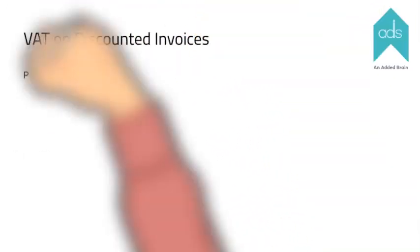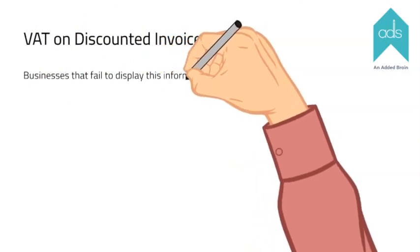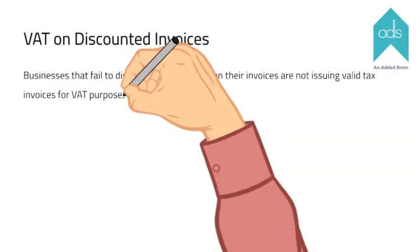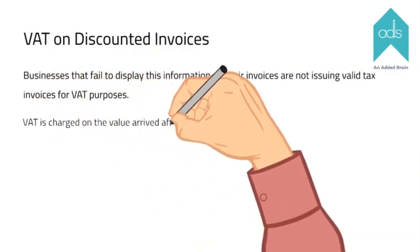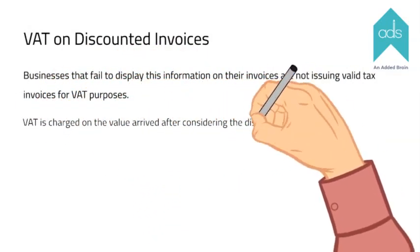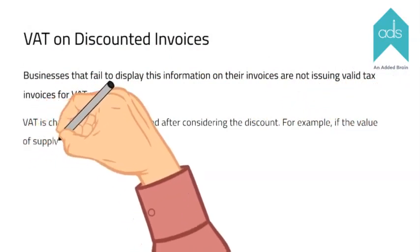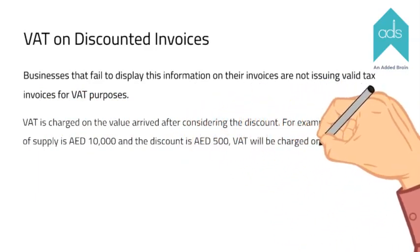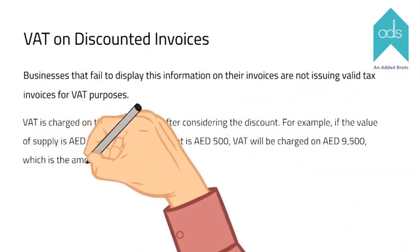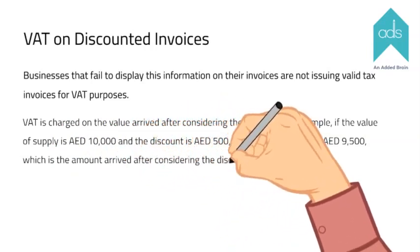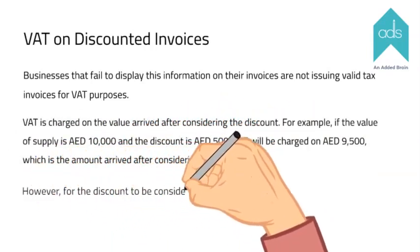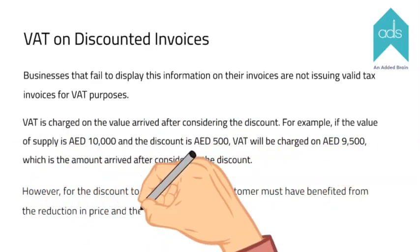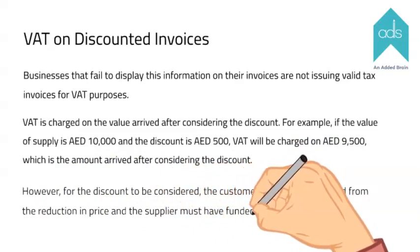Businesses that fail to display this information on their invoices are not issuing valid tax invoices for VAT purposes. VAT on discounted invoices: VAT is charged on the value arrived at after considering the discount. For example, if the value of supply is AED 10,000 and the discount is AED 500, VAT will be charged on AED 9,500. However, for the discount to be considered, the customer must have benefited from the reduction in price and the supplier must have funded the discount.